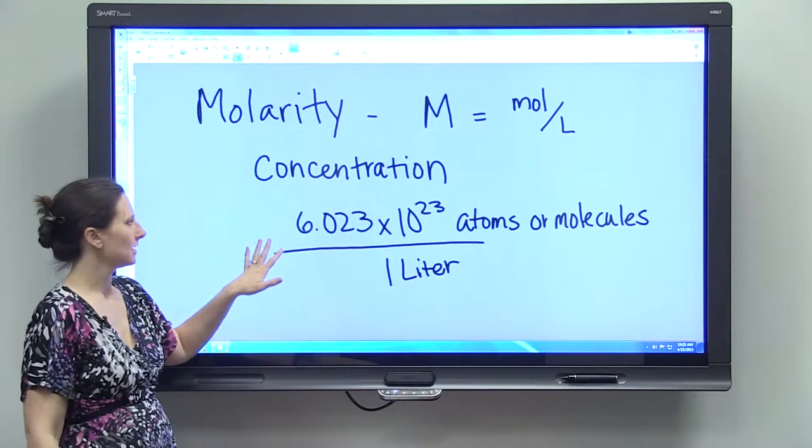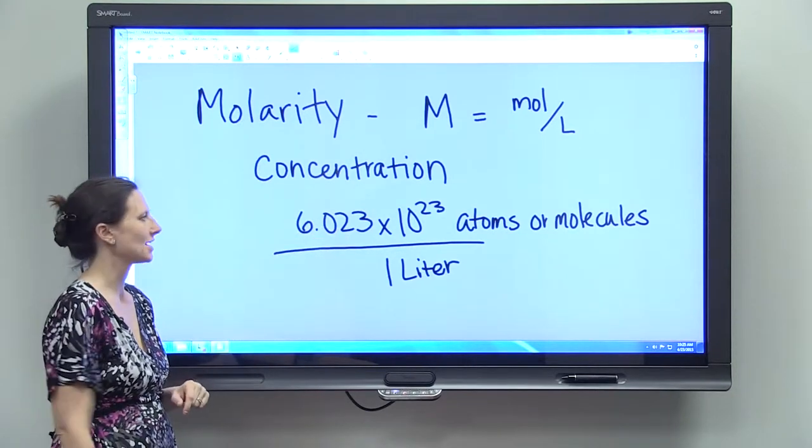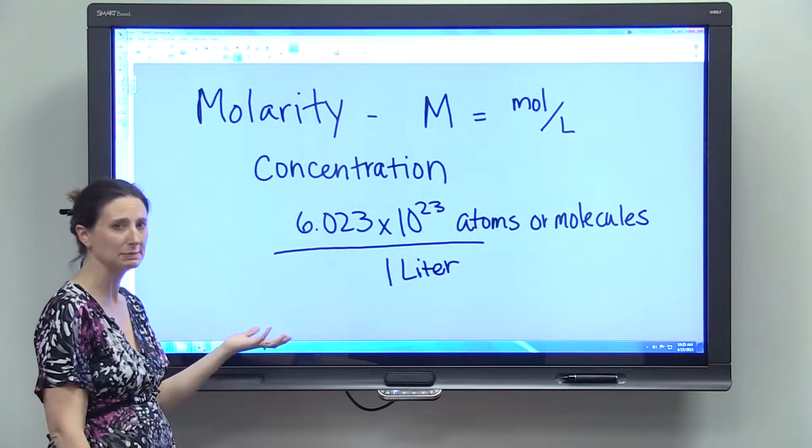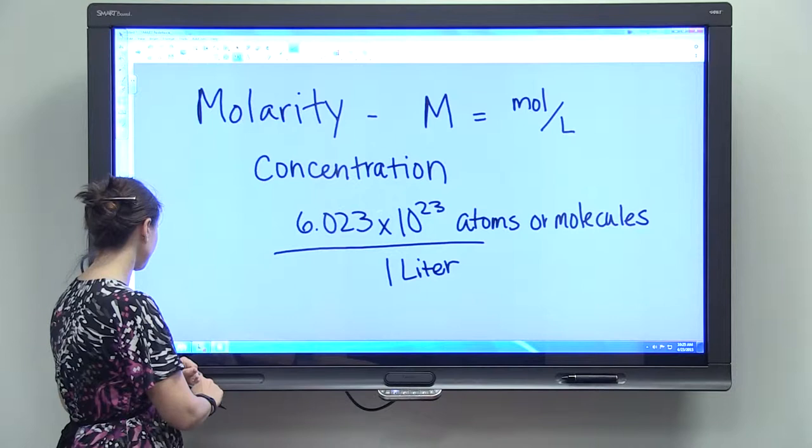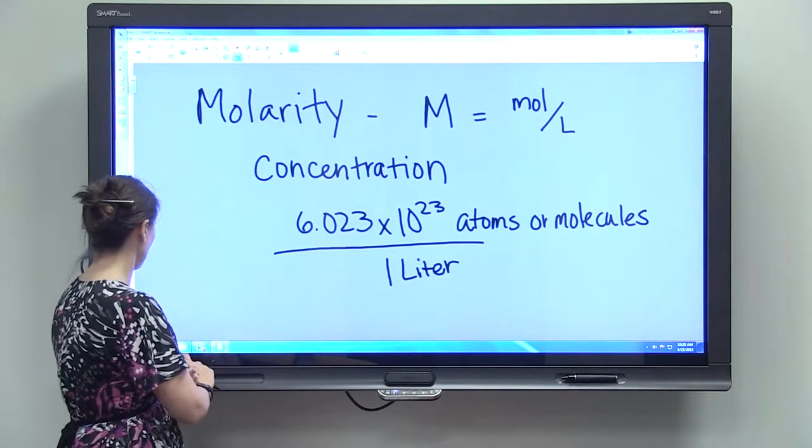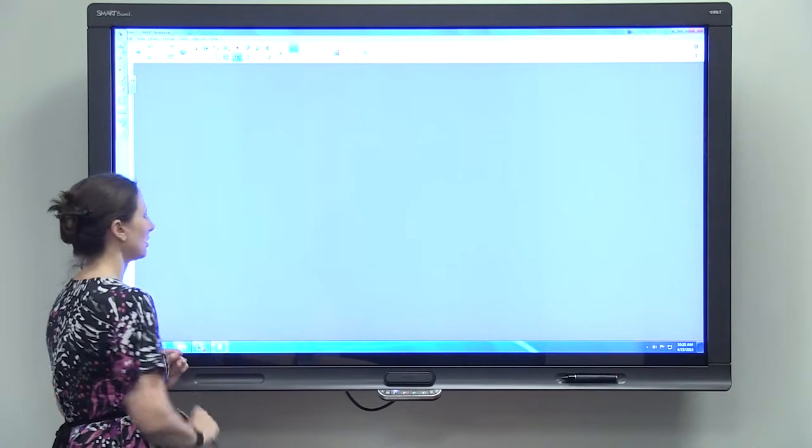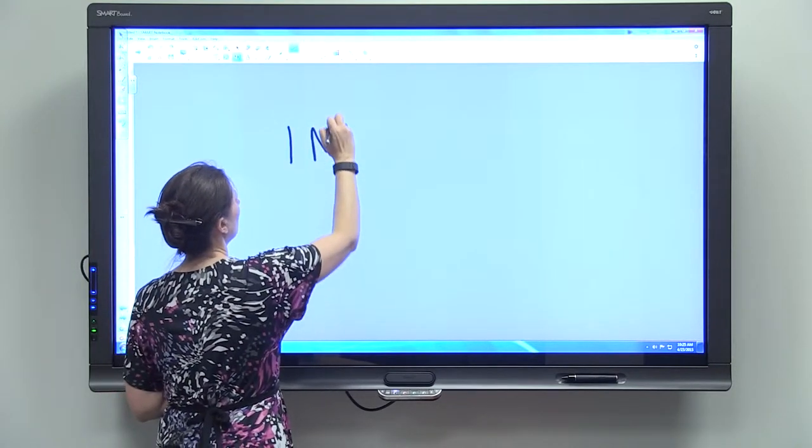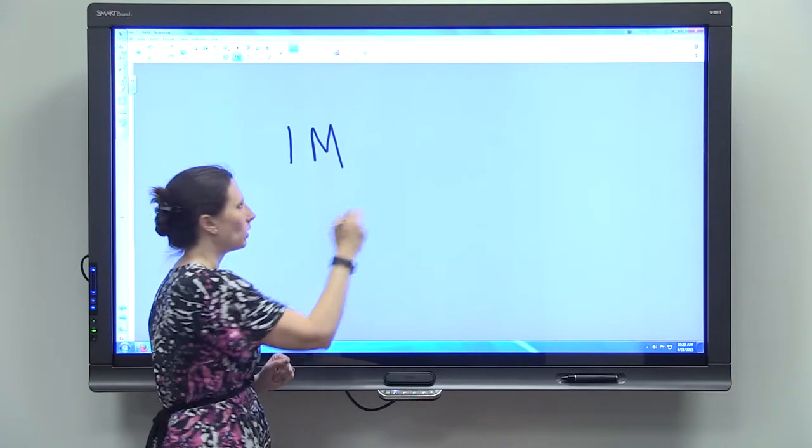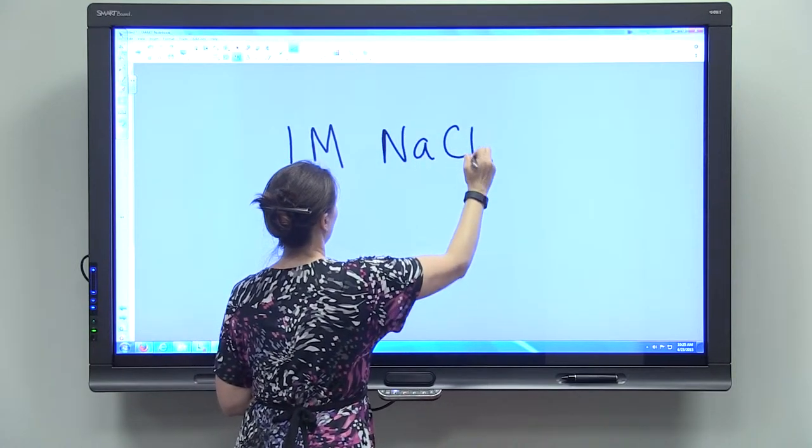So we talked previously about how to measure out 6.023 times 10 to the 23rd atoms or molecules using the molar mass. And so we're just going to do a quick example determining how to make one molar sodium chloride solution.